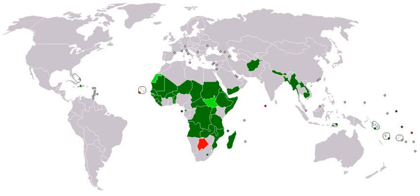Effects of global warming are expected to impact developing countries more than wealthier countries, as most of them have a high climate vulnerability. The Sustainable Development Goals by the United Nations were set up to help overcome many of these problems. Development aid or development cooperation is financial aid given by governments and other agencies to support the economic, environmental, social and political development of developing countries.